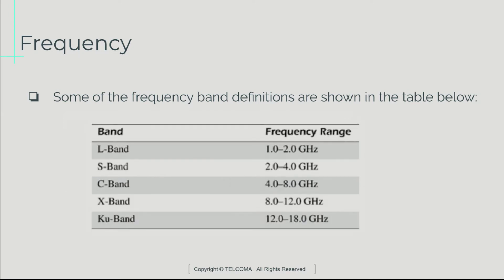This table shows some of the frequency band definitions. For L-band, the frequency range is 1 to 2 GHz. For S-band, 2 to 4 GHz is used. For C-band, 4 to 8 GHz is used. For X-band, 8 to 12 GHz is used. For KU-band, 12 to 18 GHz frequency range is used.